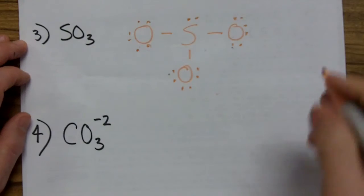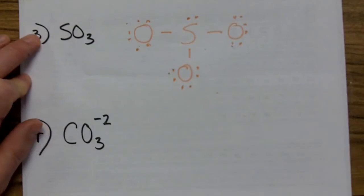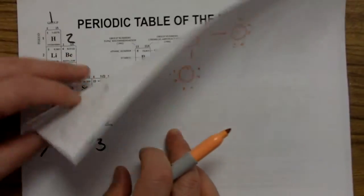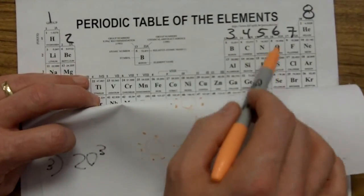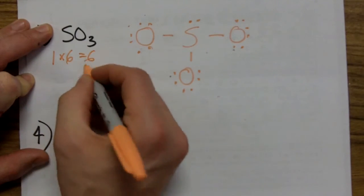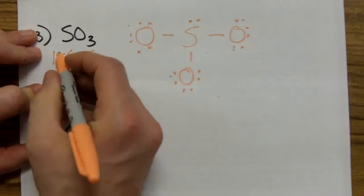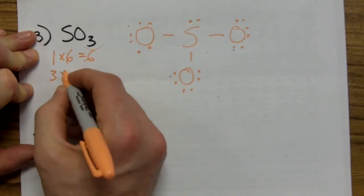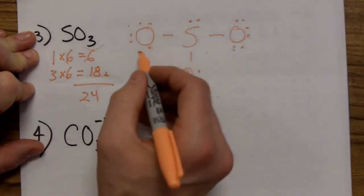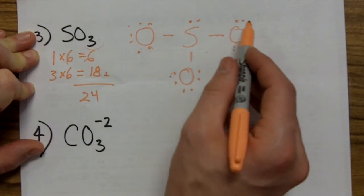Everybody's happy and we count: two, four, six, eight, ten, twelve, fourteen, sixteen, eighteen, twenty — we used twenty electrons with all lone pairs. Now let's count up the valence totals. Sulfur has six valence electrons and there's one sulfur atom: one times six is six. Oxygen also has six valence electrons and there are three oxygen atoms: three times six is eighteen. Six plus eighteen is twenty-four — we should have used twenty-four. Counting through the structure: two, four, six, eight, ten, twelve, fourteen, sixteen, eighteen, twenty, twenty-two, twenty-four, twenty-six. We used twenty-six but should have used twenty-four — a deadly error.